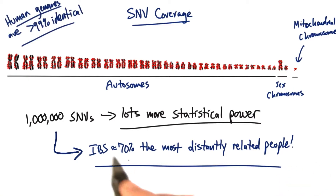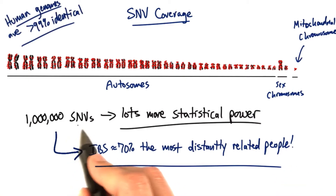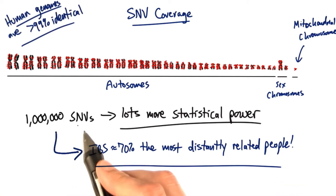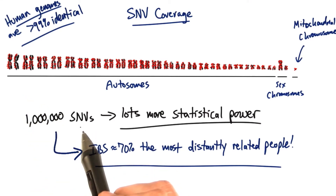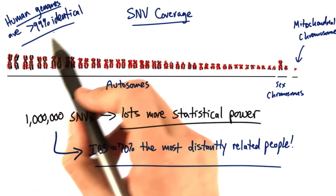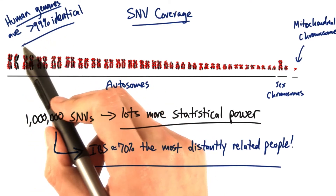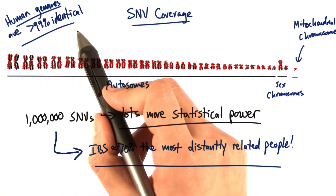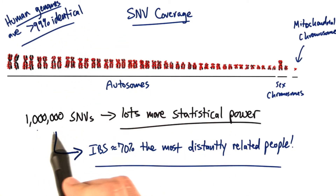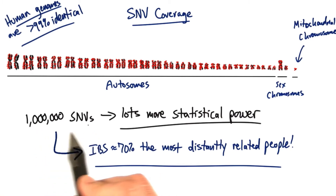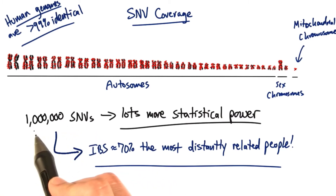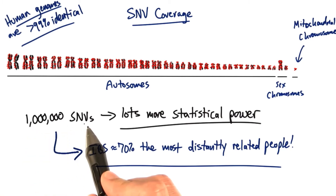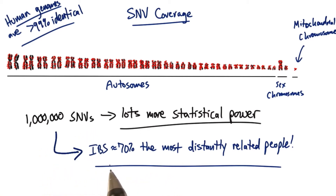This is when we focus specifically on the SNVs — the single nucleotide variants — which are regions of the genome that we know and expect to have variation. Remember that human genomes are already more than 99% identical. So even though we're sampling from regions that we know should be different, and in general we do find differences between humans here, humans just aren't that different from each other.